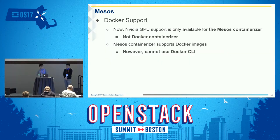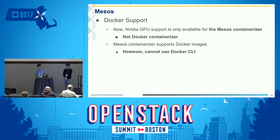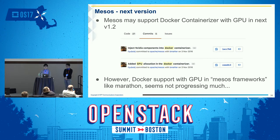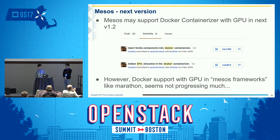However, regarding Mesos Docker support: NVIDIA GPU support is only available for Mesos containerizer, not Docker containerizer. Mesos containers support Docker images, but cannot use the Docker API or Docker CLI, which is a regrettable point since our users want to use the Docker API they're familiar with. Mesos may support Docker containerizer with GPU in the next version 1.2 based on GitHub commit logs, but Docker support with GPU in Mesos frameworks like Marathon has not progressed.